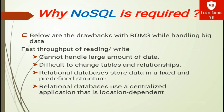First, RDBMS cannot handle large amounts of data, but NoSQL handles massive amounts of data very quickly. Second, RDBMS makes it difficult to change tables and relationships, but NoSQL is schema-free. Third, relational databases store data in a fixed and predefined structure, but NoSQL databases provide much more flexibility when it comes to handling data — NoSQL does not put a restriction on the type of data you can store together.